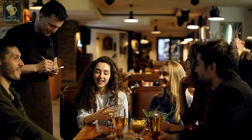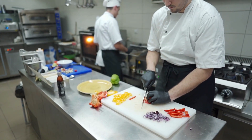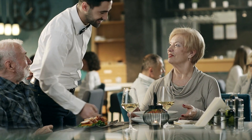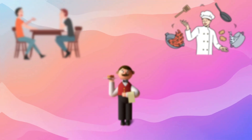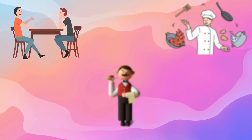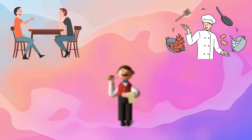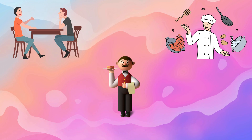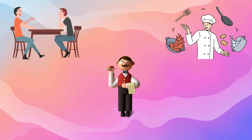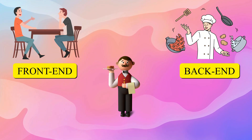Now let's take an example to understand it better. You go to a restaurant and call a waiter to order your favorite food. The waiter takes your order, goes to the kitchen, and brings back the food you ordered. If you look at this example closely, there are three people involved in this food ordering process: first, the customer who wants the food; second, the kitchen or the cook who prepares the food; and third, the waiter who serves the food.